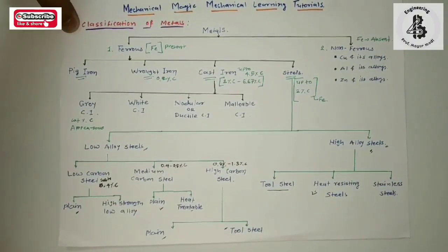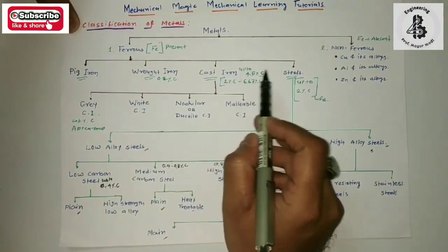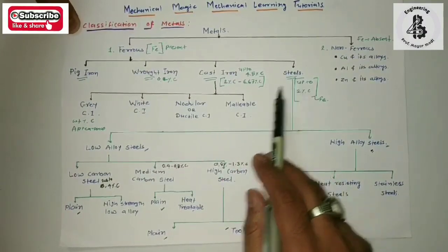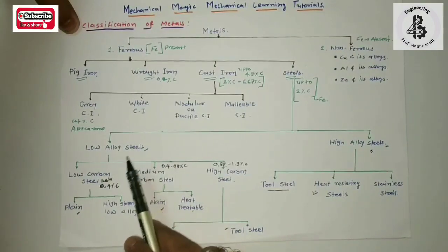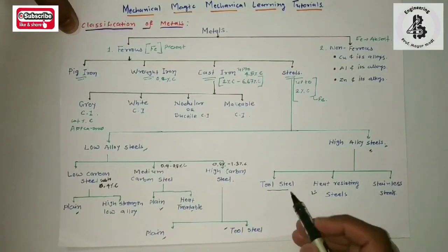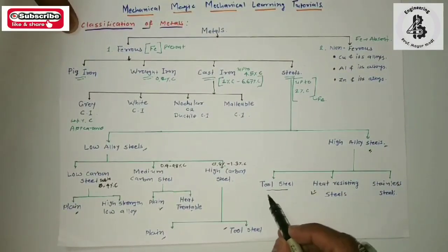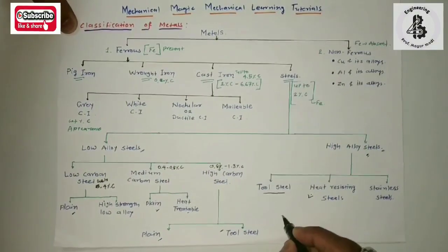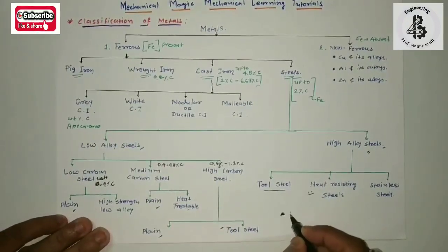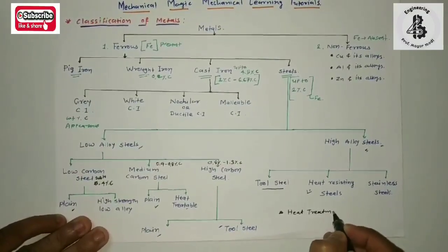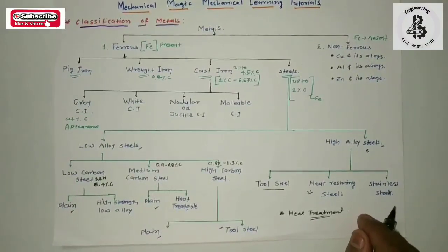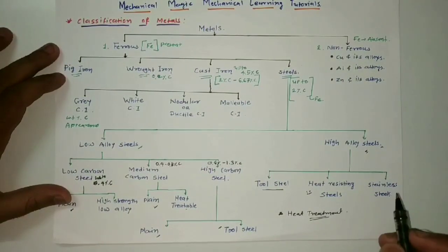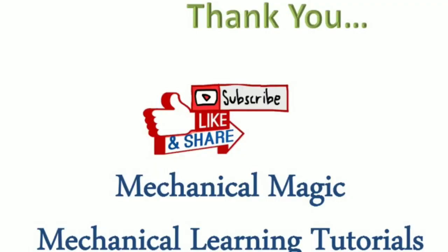So basically, metals are classified into ferrous and non-ferrous. Ferrous includes the most important categories: cast irons and steels. Cast irons include gray cast iron, white cast iron, nodular cast iron, and malleable cast iron. Steels are divided into low alloy and high alloy — low alloy is further classified into low, medium, and high carbon steel, while high alloy steels include tool steel, heat-resisting steels, and stainless steels. To further improve properties of all these materials, heat treatment processes can be applied. For more details, visit my channel — Mechanical Magic, mechanical learning tutorials. Thank you very much.